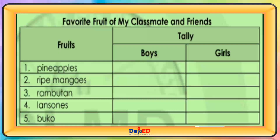Favorite fruit of my classmates and friends. Pineapples: Boys — 2, Girls — 2. Mangoes: Boys — 4, Girls — 5. Rambutan: Boys — 2, Girls — 1. Lansones: Boys — 1, Girls — 1. Buko: Boys — 1, Girls — 1.